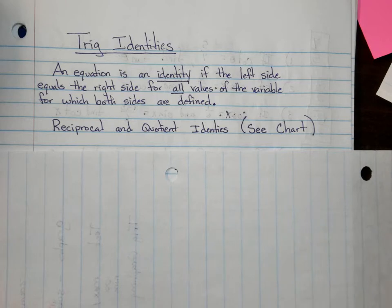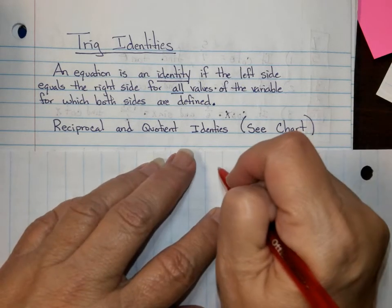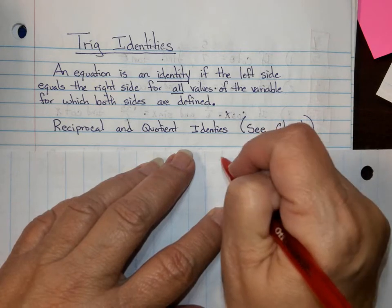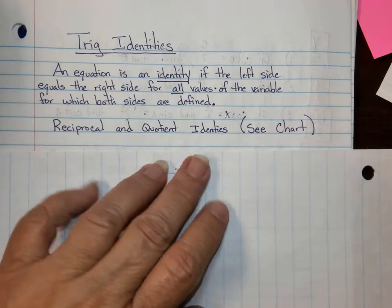Alright, so we're going to be starting with trig identities. And so the first thing is to understand what an identity is. It's an equation where the left side equals the right side for all values of the variable for which both sides are defined. So we do know that sometimes things are not defined, like when you're dividing by zero. But the identity is true all the time that things are defined.